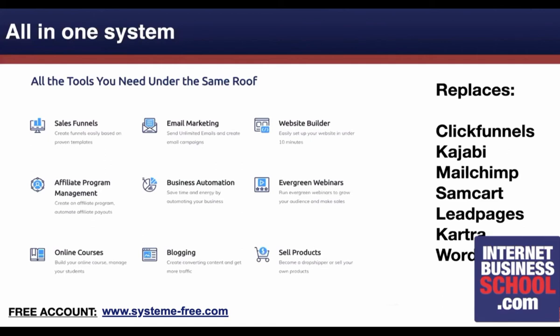Basically it replaces a whole stack of stuff. It replaces the need for systems like ClickFunnels, which we've currently got — we're paying a couple hundred dollars a month for that. Kajabi — we're paying a few thousand dollars a year. Mailchimp — I think we're about a hundred bucks a month for that. SamCart, which we use as our checkout shopping cart — that's about a hundred a month. LeadPages — about a hundred a month. So realistically this software tool replaces five, six, seven other tools you might use in your internet business.